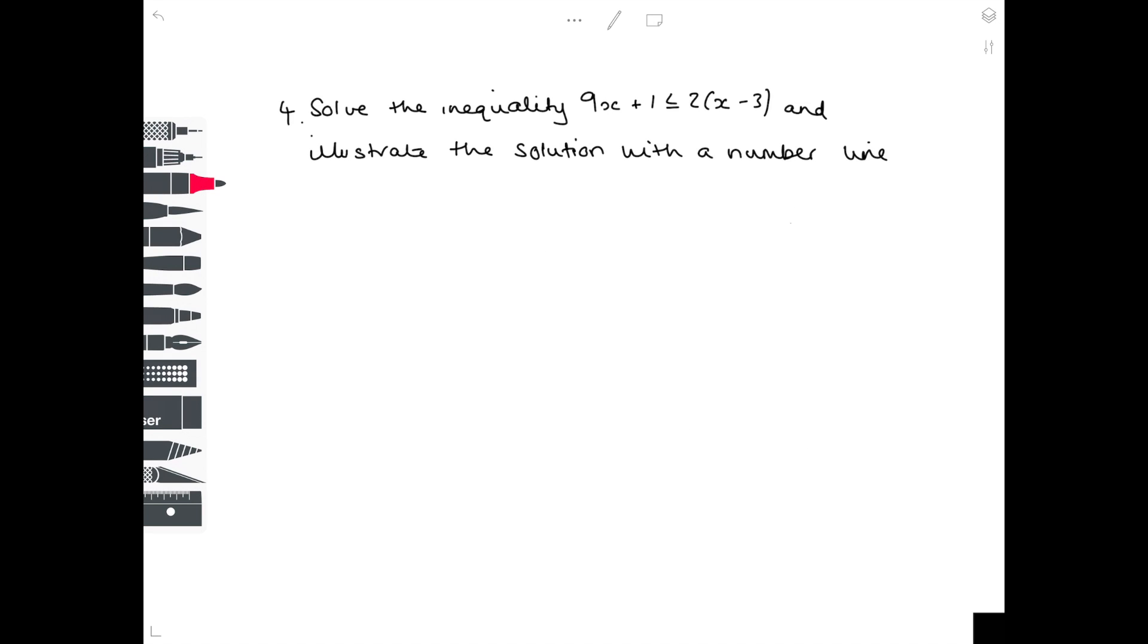And in this final example, we're solving the inequality 9x plus 1 is less than or equal to 2 bracket x minus 3. And we're illustrating the solution again with a number line. So 9x plus 1 is less than or equal to 2x minus 3. We need to simplify this inequality first of all by multiplying out that bracket.